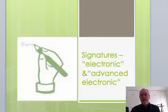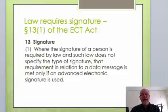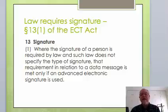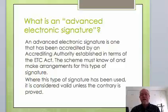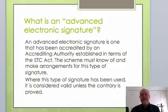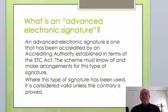We'll talk about both electronic and advanced electronic signatures. Subsection 13.1 of the ECT Act says that where a signature of a person is required by law and such law does not specify the type of signature, that requirement in relation to a data message is only met if an advanced electronic signature is used. This is a special arrangement set up under the auspices of an accrediting authority established in terms of the ECT Act. The scheme will clearly know of and have made special arrangements for this type of signature. Where this type of signature is being used, it's considered valid unless the contrary is proved.